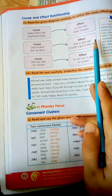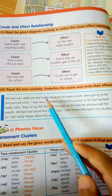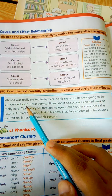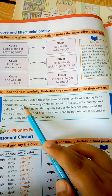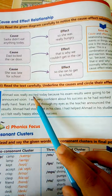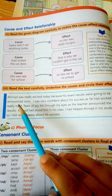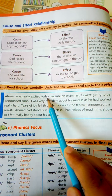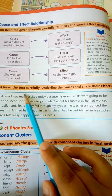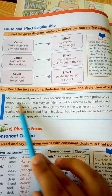پہلے cause تھا پھر effect تھا، ادھر change ہو گیا۔ Ahmed was really excited — وہ excited تھا — because اس کا result آنے والا تھا۔ اس میں effect کیا ہے کہ وہ excited ہے، اور reason یہ ہے کہ اس کا result تھا۔ تو circle the effect اور underline the cause۔